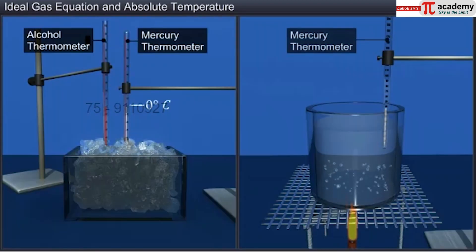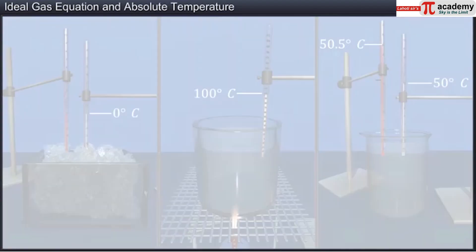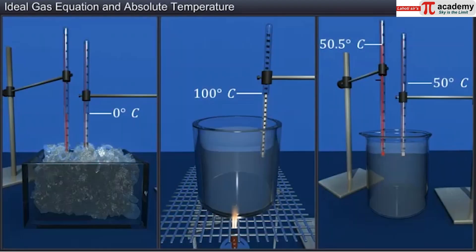The readings shown by different thermometers may coincide at calibration points, but may vary at other temperatures. Due to this, these thermometers are of no use when accurate measurement of temperature is needed.